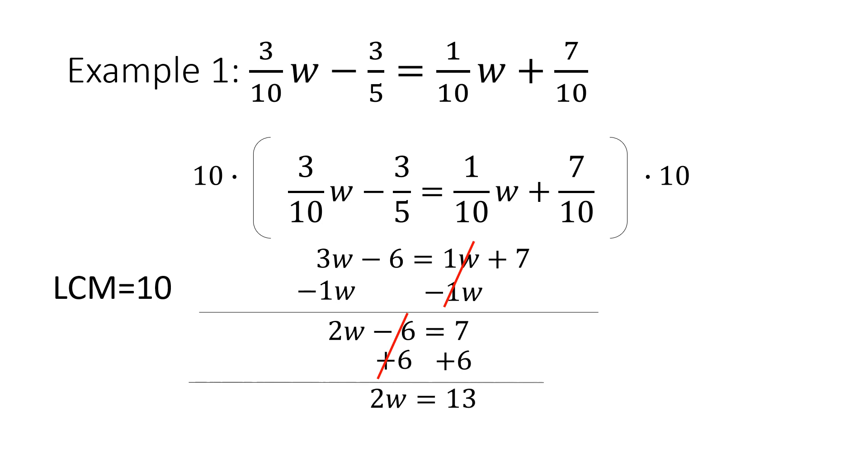Now, since the 2 and the W are attached by multiplication, to undo multiplication I'm going to divide both sides by 2. That gives me my final answer: W = 13/2, because I can't simplify that any further.